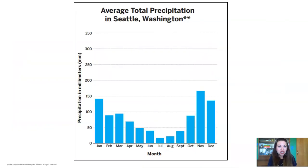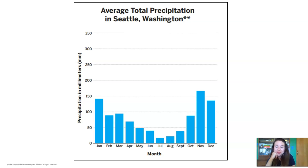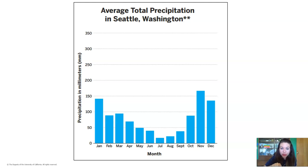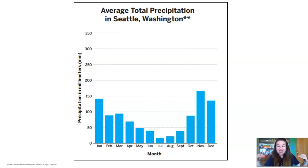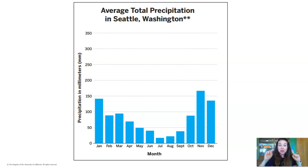Now we're going to look at precipitation in Seattle — the total amount of rainfall for each month. What do you notice about the pattern? If you trace the bars, it starts out pretty high with a lot of precipitation in January, February, and March, then dips down in June, July, August, and then goes back up again in October, November, December. So the months when it's warm — June, July, and August — we don't get a lot of rain. But in the cold months at the beginning and end of the year, we do get a lot of rain. Instead of a hill like temperature, we have a dip for precipitation.